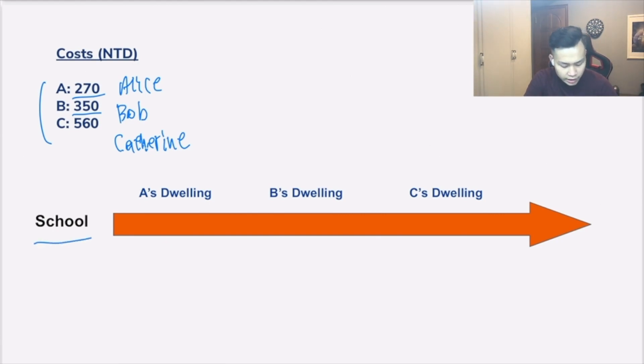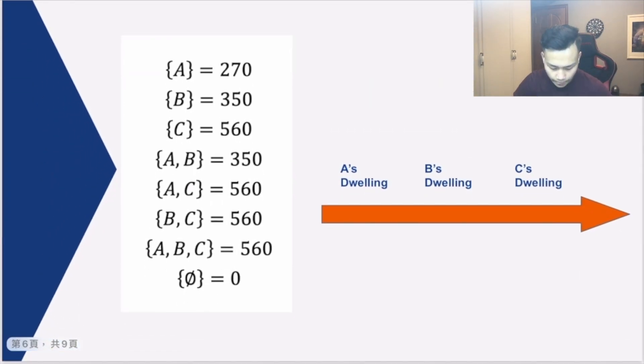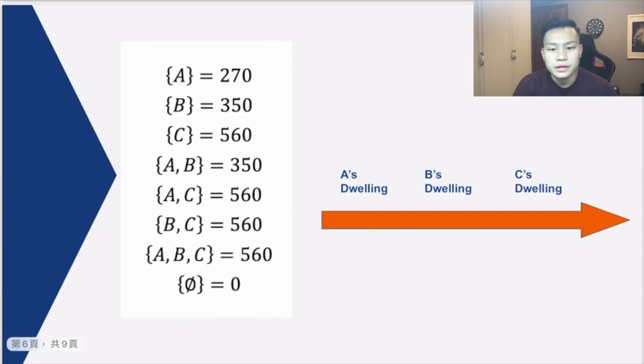Here they're starting from the school, which we could think of as an origin. Since Alice is paying the least amount of cost in order to take the taxi, we imply that for Alice, her dwelling is D1 distance from the school. We're able to imply that D2 is greater than D1 and D3 is greater than D2, which each represents the distance for Bob and Catherine and their dwellings from school.